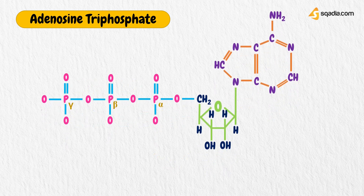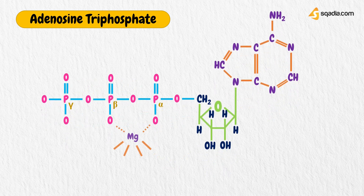The active coenzyme is, in fact, generally a complex of ATP with a magnesium ion, which is coordinatively bound to the alpha and beta phosphates. However, the term ATP is usually used for the sake of simplicity.